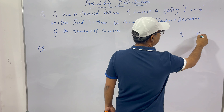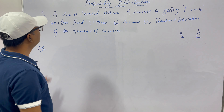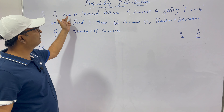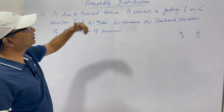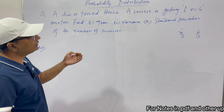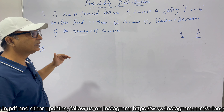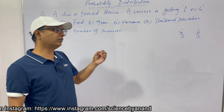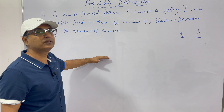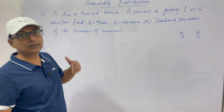For the discrete probability distribution we need two things: first is Xi (the variate) and second is Pi (the probability associated with the variate). What are the variates? A die is tossed thrice — there are a number of trials. A success is getting one or six on a toss, so that is our event E. We need to find the number of successes out of three trials — how many times event E has occurred.